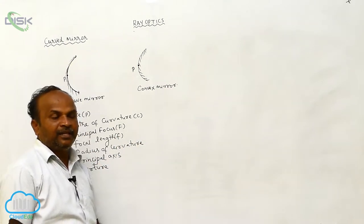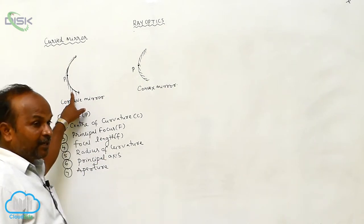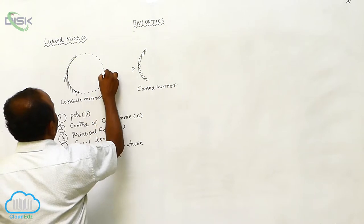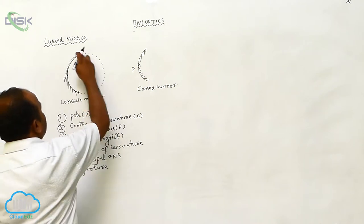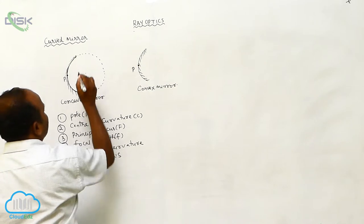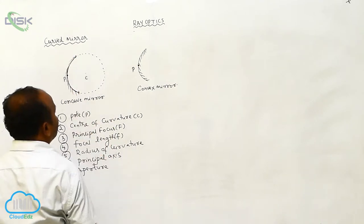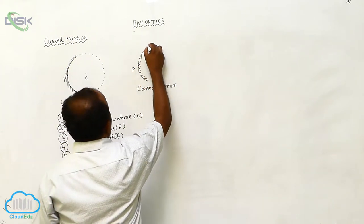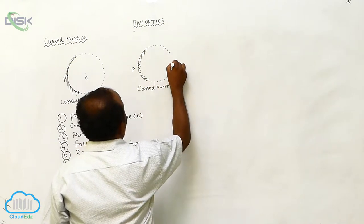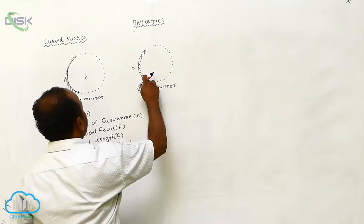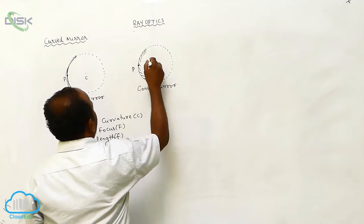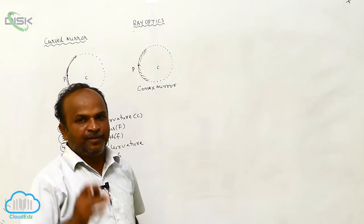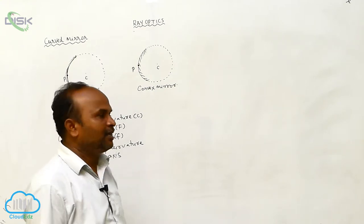What is the center of curvature? A curved mirror is a portion of a spherical mirror. The center of the sphere from which a curved mirror is made is called the center of curvature.